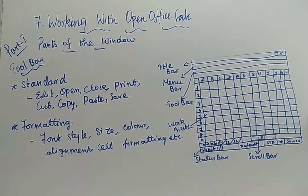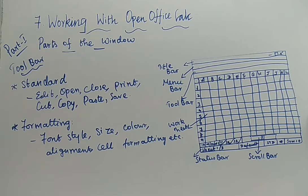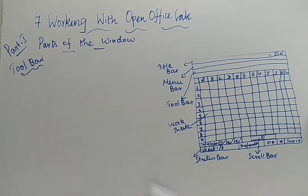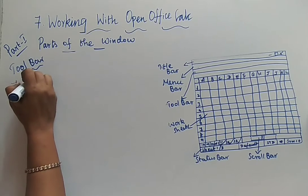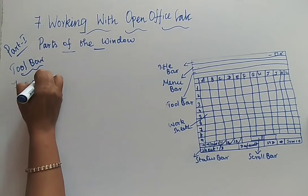And the next one is nothing but your Formula Bar. Totally, how many types of toolbars do we have in OpenOffice Calc? The first one is your Standard Toolbar. Next one is your Formatting Toolbar. And the next one is your Formula Bar.